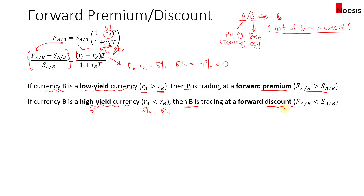Keep in mind: when a currency is trading at a forward premium, that currency is a low yield currency. If a currency is trading at a forward discount, that means it's a high yield currency. If you're not sure, always write the formula down and ask yourself: if it's a forward discount, the forward rate must be less than the spot rate. So the denominator has to be larger than the numerator — meaning currency B must be a high yield currency. Now with that in mind, we move to the roll yield concept.